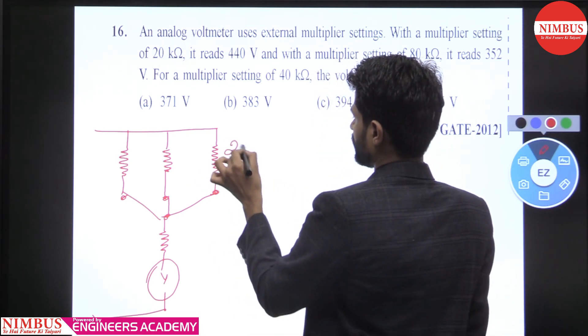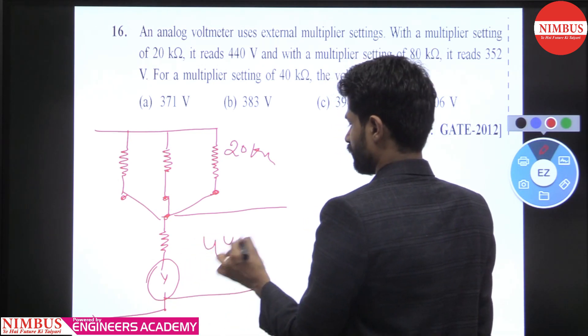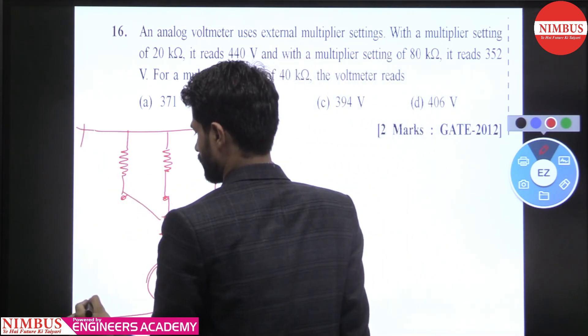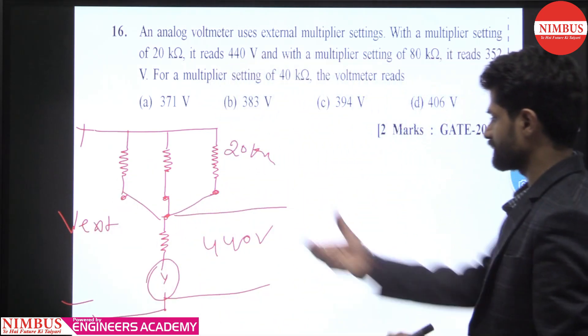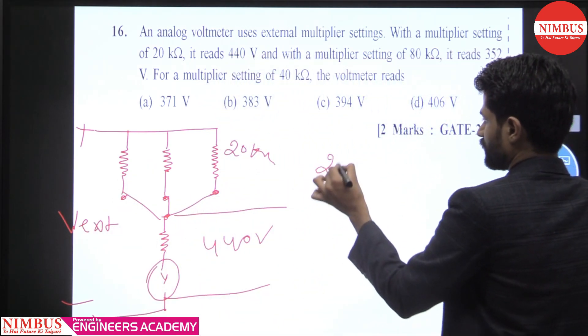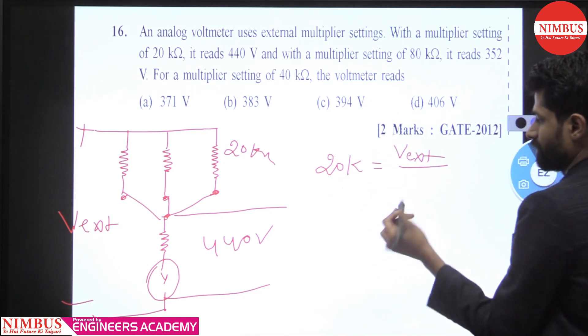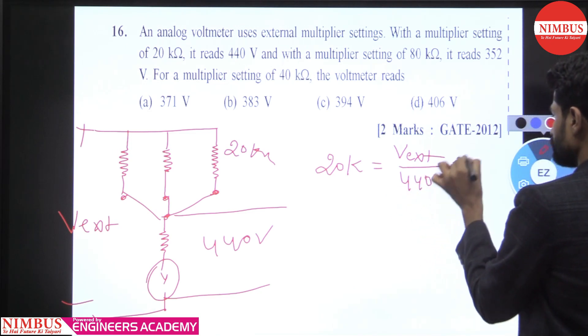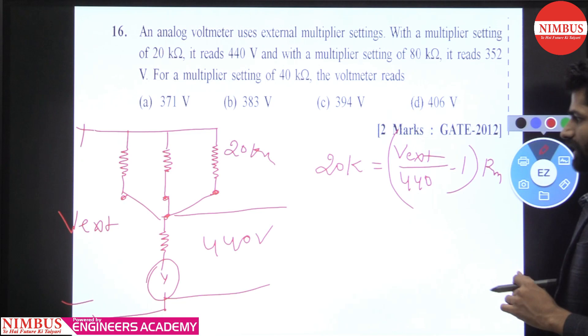Aise maalom, this is the 20 kilo ohm. Yehaan 20 kilo ohm lagaya, yehaan kitna read kara raha hai - 440 volt. Aur yehaan jo humne apply kiya hua voltage, this is the V extent. So yehaan se simply, hum log likh sakte hain, ki 20 kilo ohm barabar V extent divide by Vm minus 1 into Rm, right. Same the equation.